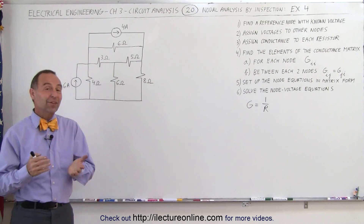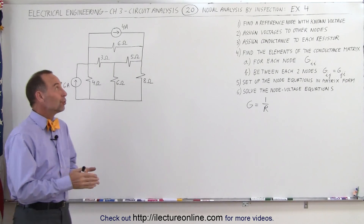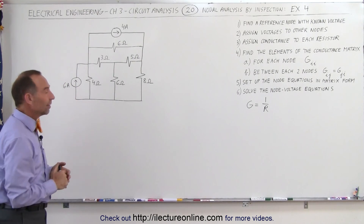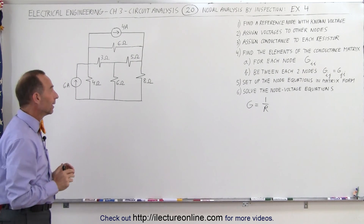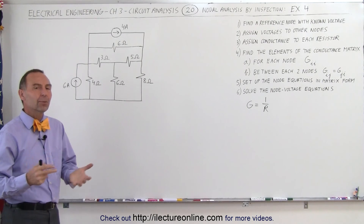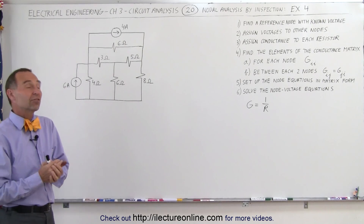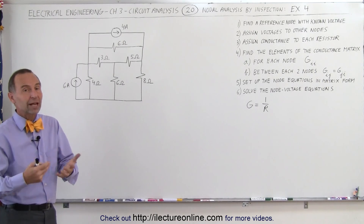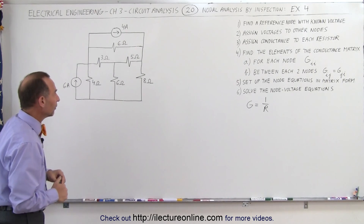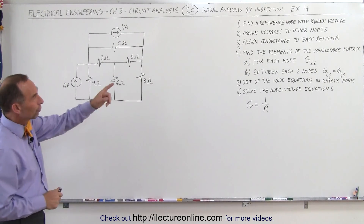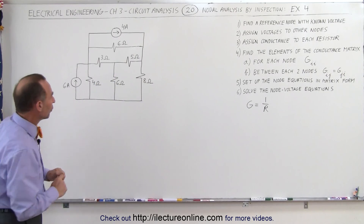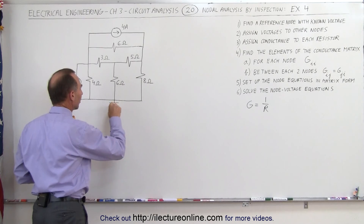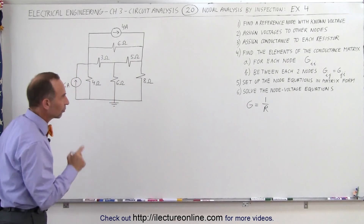Welcome to Electronline. Here's our fourth example of how to use the nodal analysis method by inspection to solve a circuit. It's a little bit more complicated and the matrix will be a little bit bigger. We're not going to actually solve the matrix in this case, but we're going to show you how to quickly set it up so you can go ahead and continue to solve it. First, we find a reference node with the known voltage — let's connect the circuit at the bottom to ground, which becomes our reference voltage of 0 volts.